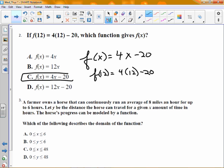All right, loved this problem earlier in the day as I went through this one because of some of the things it's going to force us to talk about. It says a farmer owns a horse that can continuously run an average of 8 miles an hour for up to 6 hours. Let y be the distance, distance equals 8 times time, y is the distance for a given x amount of time. Then, notice it says which of the following describes the domain? Well, which of those variables is the domain, the x or the y? Yeah, x is domain, y is range.